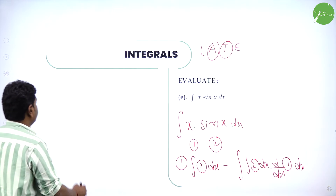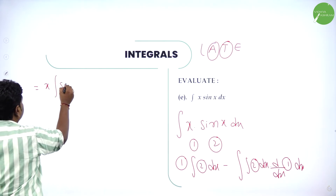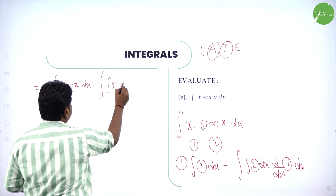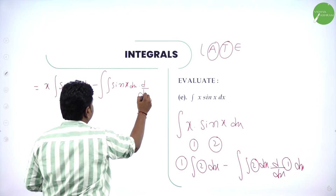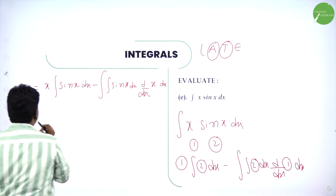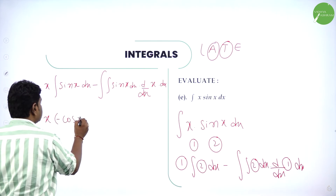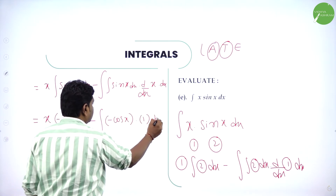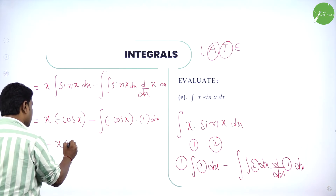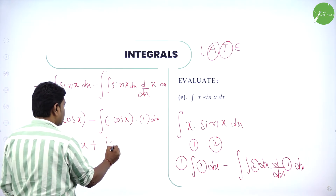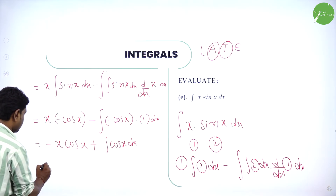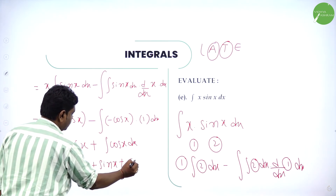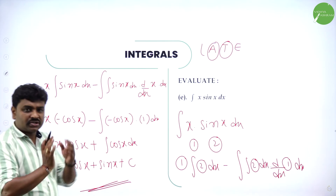First function is x. So: x into integration of sin(x) dx, minus integration of sin(x) dx into d/dx of x. Integration of sin(x) is minus cos(x). So: x·(minus cos(x)) minus integration of (minus cos(x))·1 dx. Simplify: minus x·cos(x) minus of minus, so plus integration of cos(x) dx. Integration of cos(x) is sin(x). Final answer: minus x·cos(x) plus sin(x) plus c.